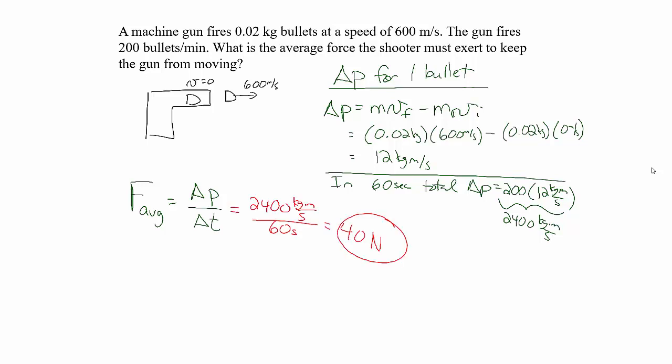And so the average force is the change in momentum divided by the time. The total change in momentum over that 60 seconds is 2,400 kilogram meters per second. The time interval was 60 seconds. So the average force that the shooter was exerting on the gun was 40 newtons.